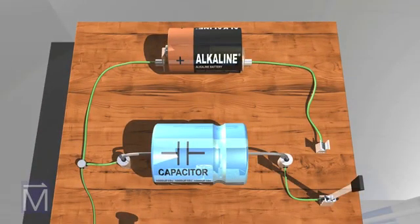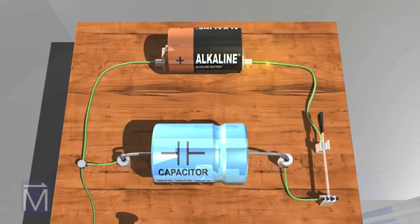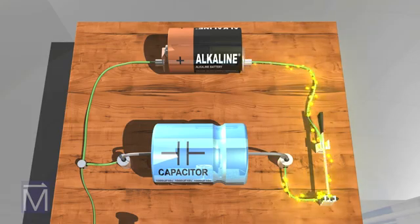First, we need to charge a capacitor. By closing the switch, we create a circuit that includes both the capacitor and the battery. Electrons flow from the battery to the capacitor, where they are stored.